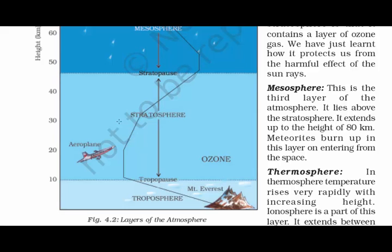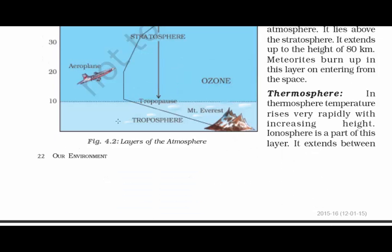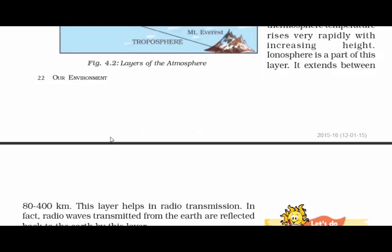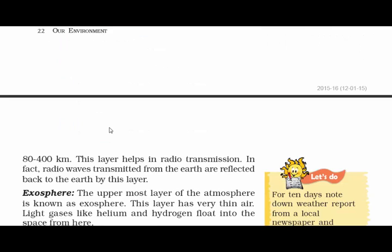The third layer is the mesosphere. The height of the mesosphere is 80 km from the ground. Meteorites burn up in this layer when entering from space. Then comes the thermosphere — it is very hot in this layer. Temperature increases as the height increases. The ionosphere exists in this layer, and the height of this layer is 80 to 400 km from the ground. This layer is also very helpful in radio transmission — radio waves transmitted from Earth are reflected back to Earth by this layer.